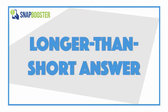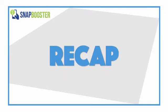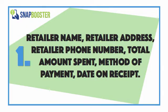As a final recap, what are the things that we take from your receipt? We take the retailer name, the retailer address, the retailer phone number, the total amount spent, your method of payment, and the date on the receipt.